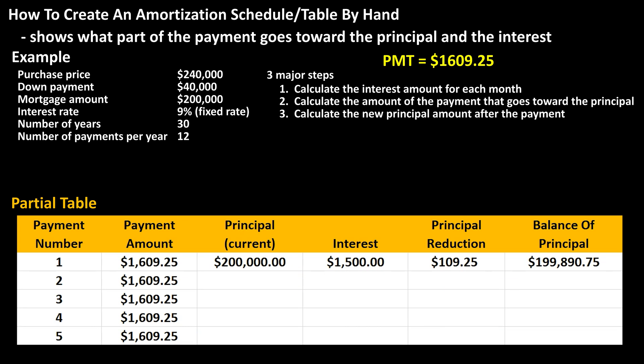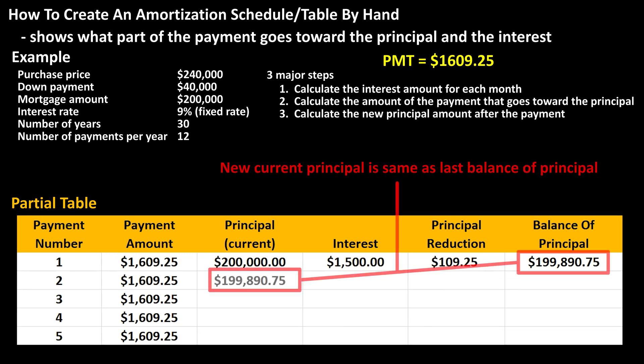Now for the second row, for payment number 2. For column 3 — the current principal — this is the new principal amount at the start of the month, which is the same as the balance of principal after the last payment. So this is $199,890.75, and we can carry this amount over to column 3 each time we calculate it.